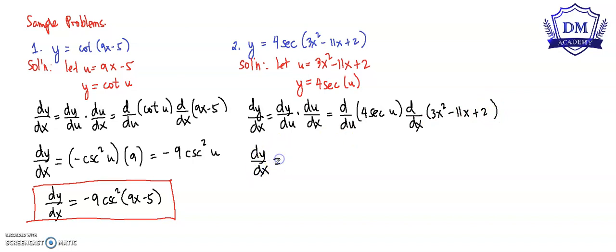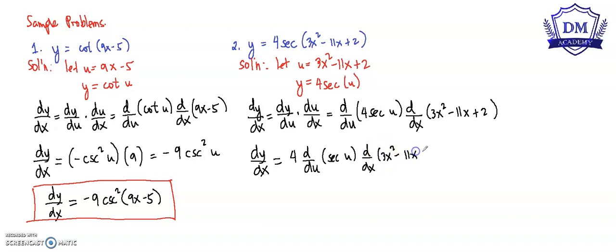So the derivative of y with respect to x: using the constant multiple rule for differentiation, we have 4 times d over du of secant u, times d over dx of 3x squared minus 11x plus 2. The derivative of secant u is secant u tangent u.